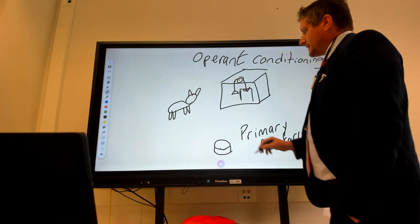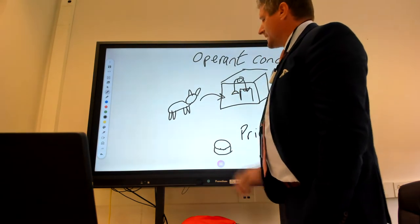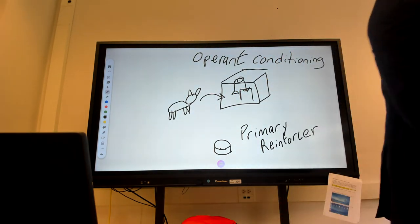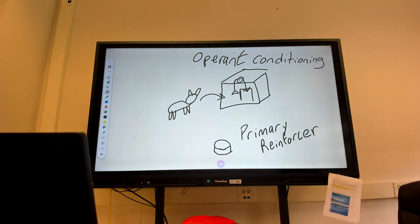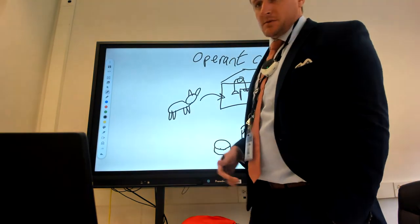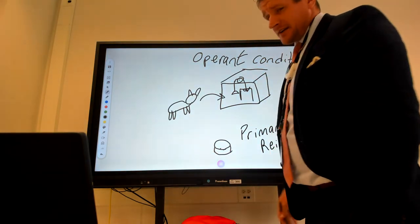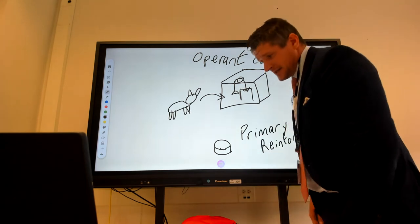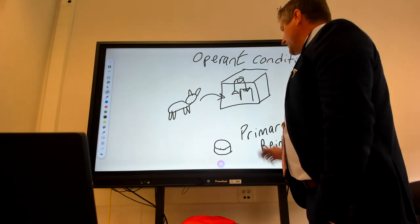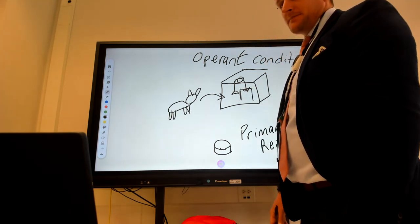So I take cat, put cat in box, cat mills around, wanders, strolls, eventually bumps lever, maybe gets interested in the spring, hits it, opens up, might take forever, 600 seconds, 10 minutes, whatever, and all of a sudden the cat escapes, gets food.